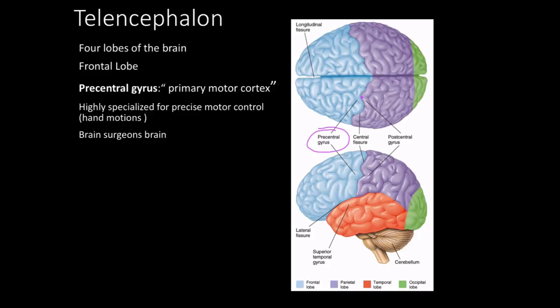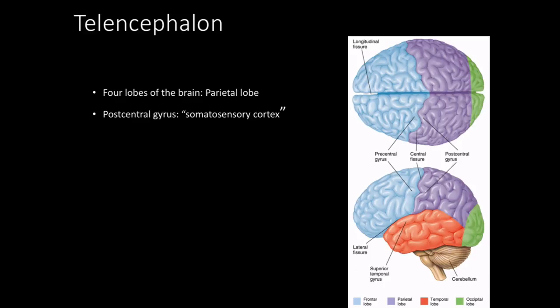Within the frontal lobe, the precentral gyrus contains the primary motor cortex. It is highly developed, and the ability to make tools was a huge evolutionary advantage that remains with us today. For example, a brain surgeon's precentral gyrus must be very well developed in order to perform such precise operations.